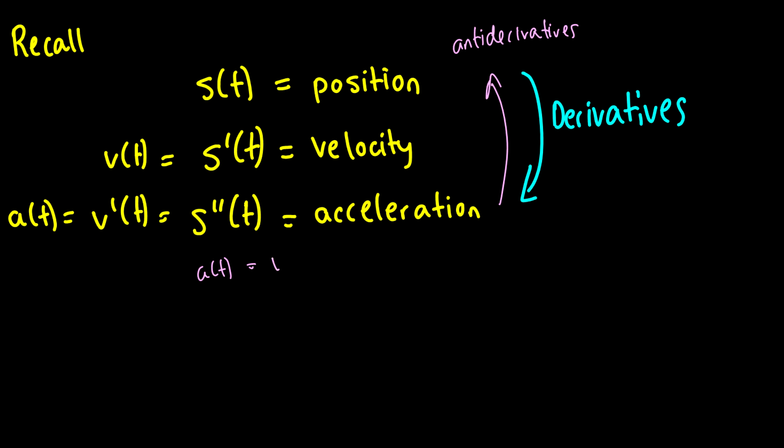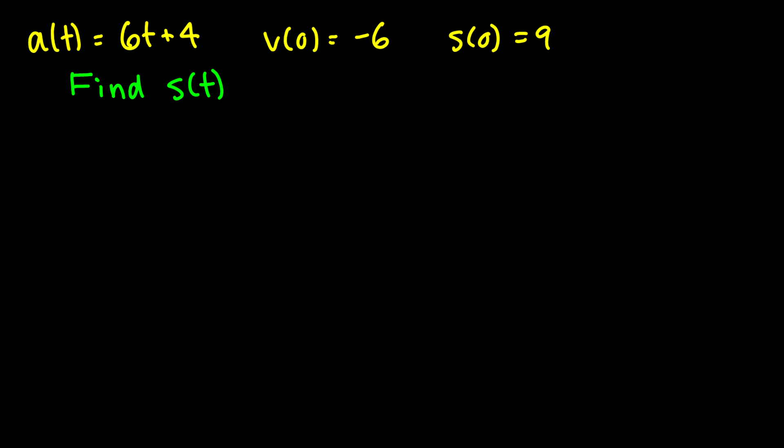Well, how do we find out what the constant is? Don't we need the constant to figure out s(t)? And the answer is yes. So in this problem coming up we get some conditions. We get what the velocity at zero is equal to and we get the position at zero. Let's figure out how to do this.